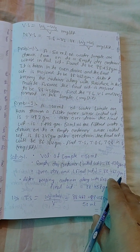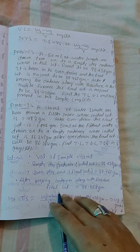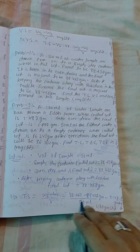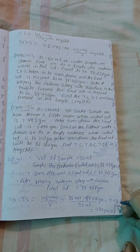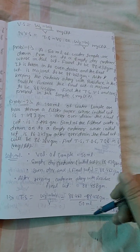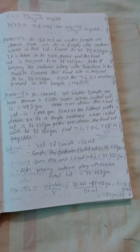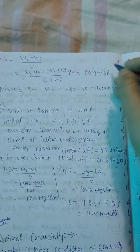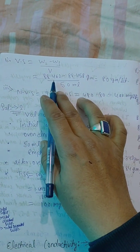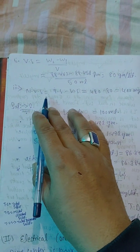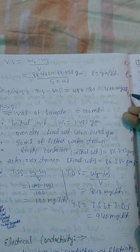For Problem 1 solution: volume is 50 ml. Oven dry final weight W2 equals 88.462 g; muffled furnace final weight W3 equals 88.458 g. Total solid equals (W2 minus W1) divided by V equals 0.024 g per 50 ml equals 480 mg per litre. Volatile solid equals (W2 minus W3) divided by V equals (88.462 minus 88.458) divided by 50 equals 80 mg per litre. Non-volatile solid equals total solid minus volatile solid equals 480 minus 80 equals 400 mg per litre.